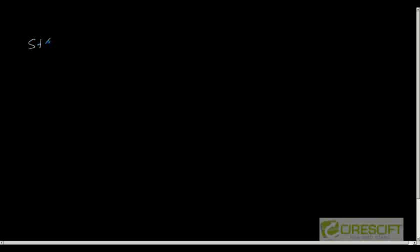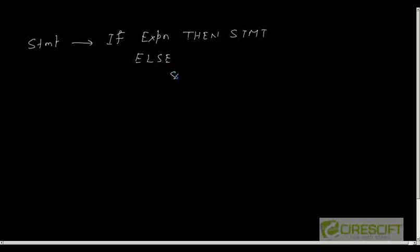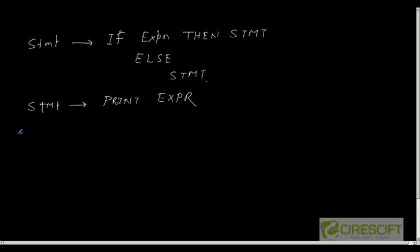Suppose I have a language with two grammar rules. One is: statement can be an if-else statement — 'if expression then statement else statement'. Another rule is: statement can be 'print expression', where print is a token in my language. And expression is simply a number, where number is a token.